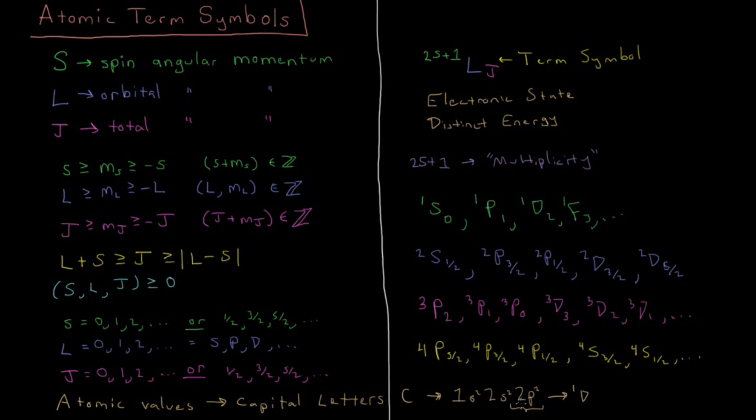And we'll show that the term symbols you can get for this 2p2 are going to be a singlet d2, triplet p2, triplet p1, triplet p0, and singlet s0. So we'll work through that example on the next video and show how you can go from looking at an individual atom with a given electron configuration and derive what the term symbols should be possible for that given atom in that electron configuration.